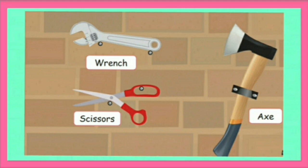Wrench. W-R-E-N-C-H. Kuredu. Wrench is a tool to pull something strongly and suddenly.